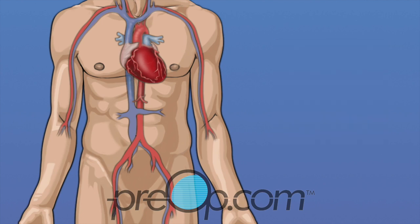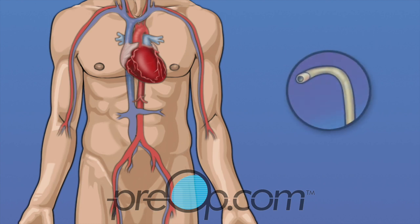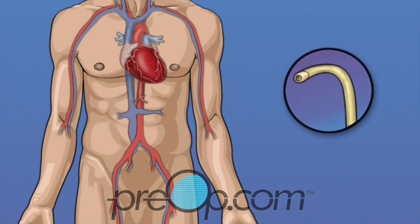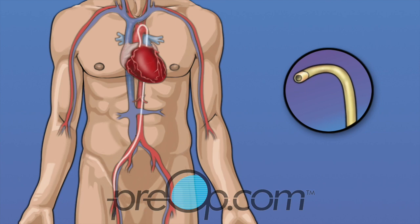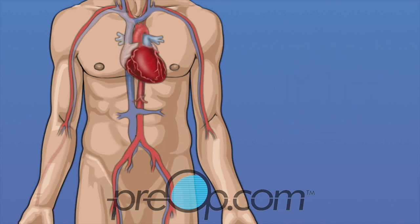To do a cardiac cath, a cardiologist places a thin tube called a catheter through an artery in your leg or arm to reach your heart. The femoral artery in the leg is most commonly used. The catheter is inserted into the artery in the groin, then guided to reach the heart. The radial artery in the arm is another site where a catheter can be placed.